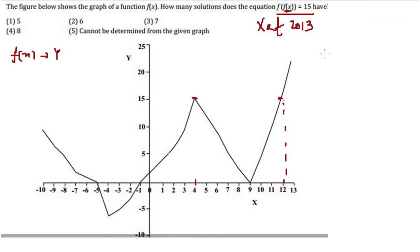Now f(x) = 4 again means we are talking about the y value. So if I plot y = 4, which points have y coordinate as 4? I have this point, this point, this point, and this point.